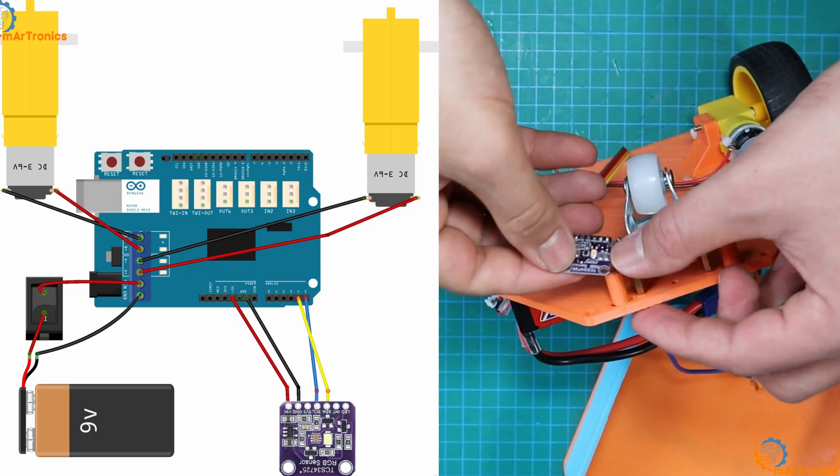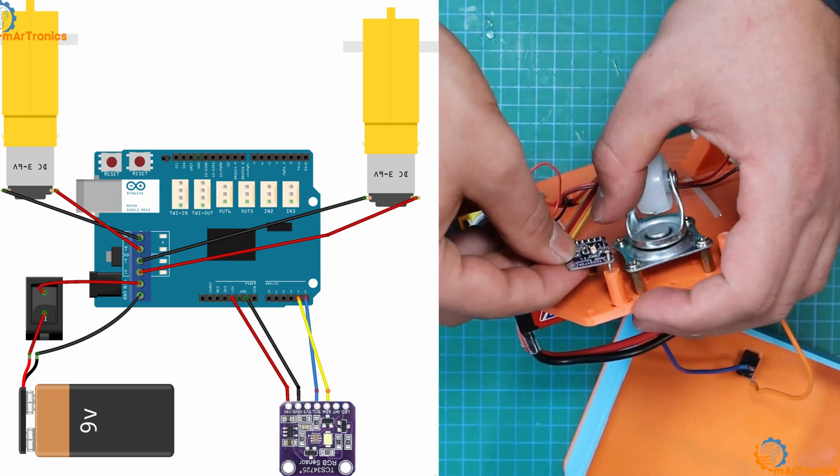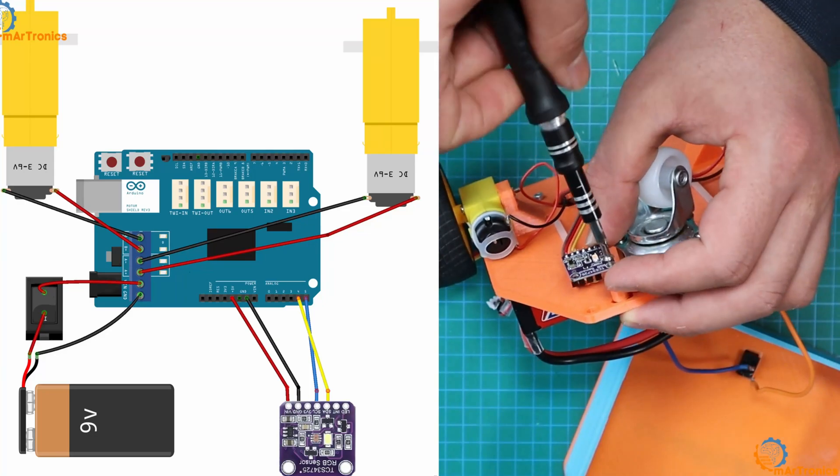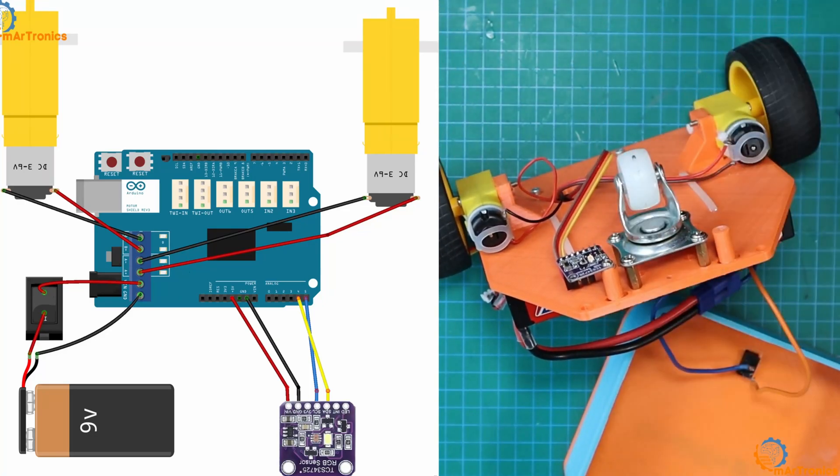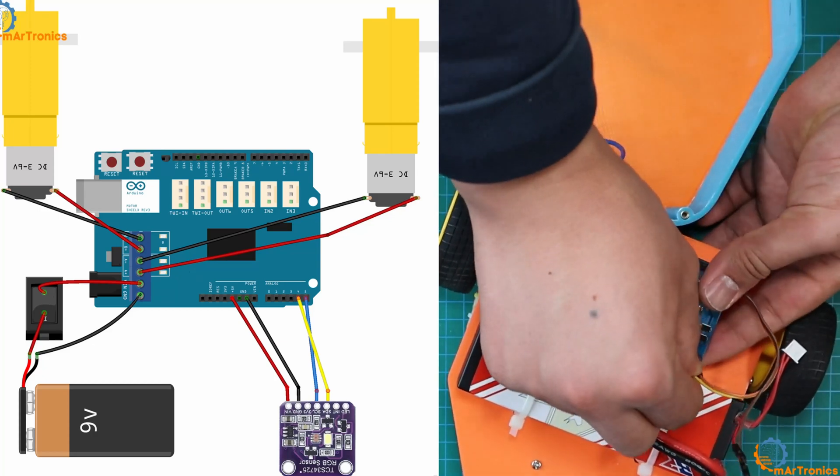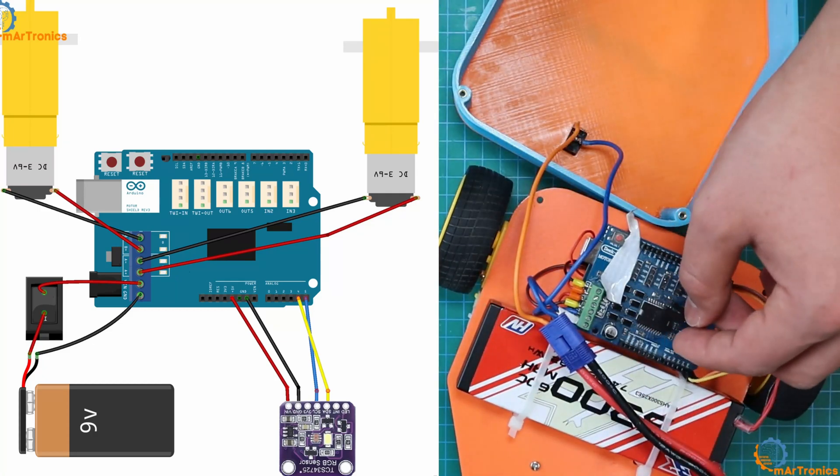After completing the theoretical explanation of the project, I will now install the sensor on the robot, installing it mechanically on the robot, and I will also connect it electrically to the Arduino board, as shown in the following electrical diagram.